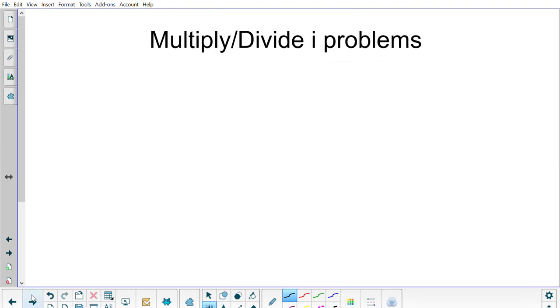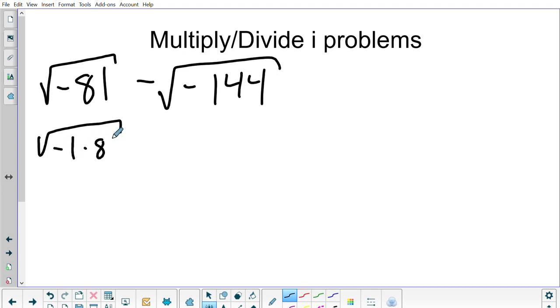So how do we solve these types of problems? Let's say I have square root of negative 81 minus square root of negative 144. This would become square root of negative 1 times 81 minus square root of negative 1 times 144.